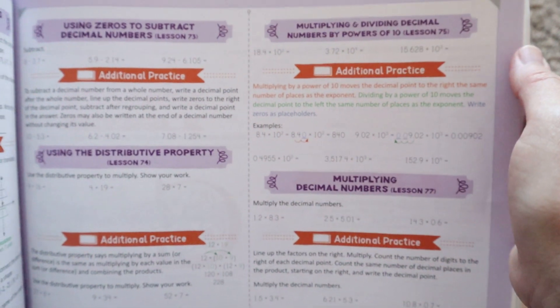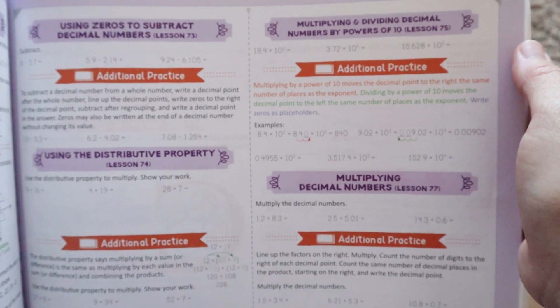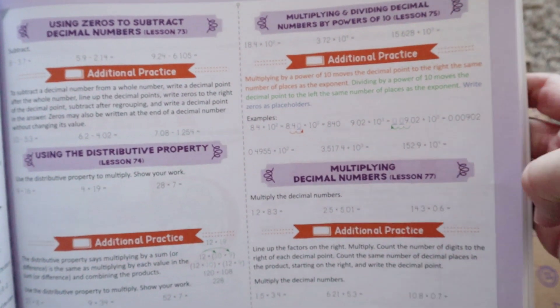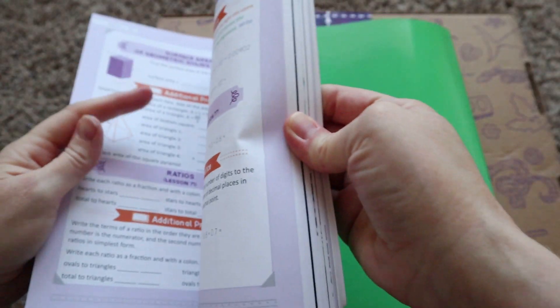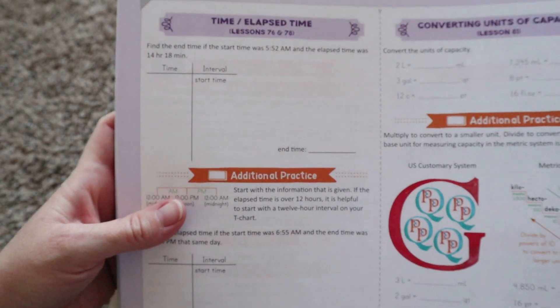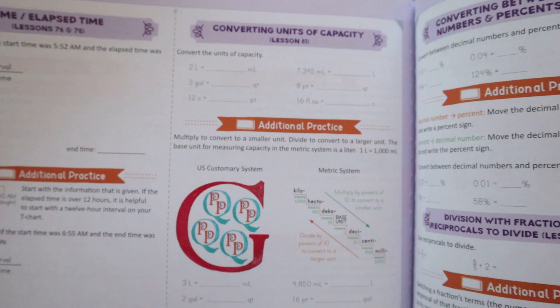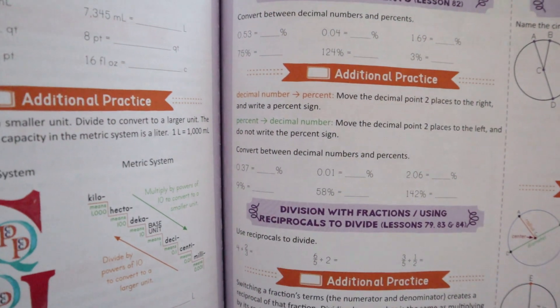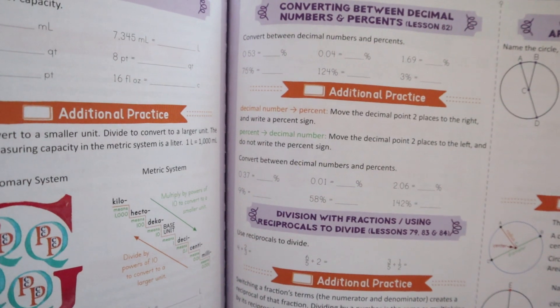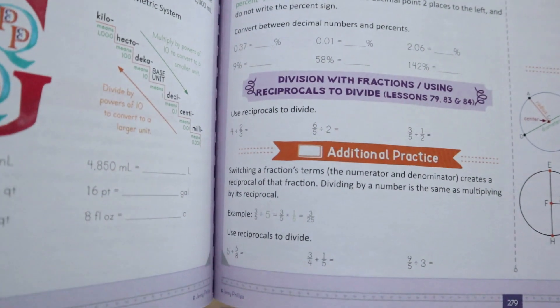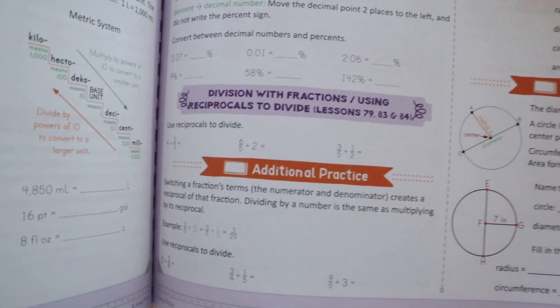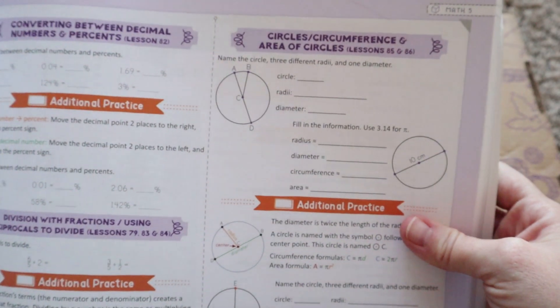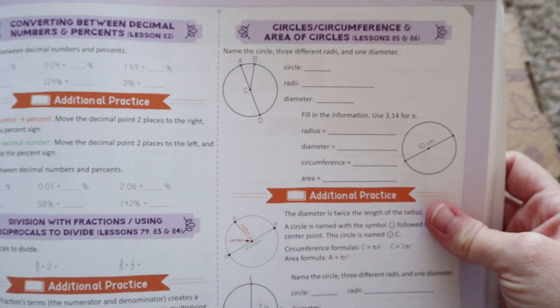They will do some multiplying and dividing decimal numbers by powers of 10 multiplying decimal numbers in general they will do some time elapsed work converting units of capacity converting between decimal numbers and percents they will do some division with fractions using reciprocals to divide and they will do circles and circumferences and area.